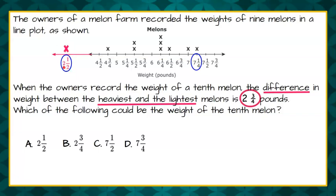But we know if we're going to go from two and a half to seven and one-fourth, that's almost a difference of five. That is way more than two and three-fourths. So we're going to rule out choice A, because it's too big of a difference.